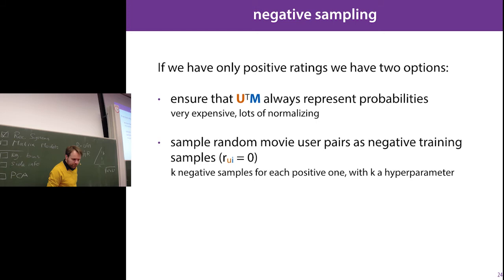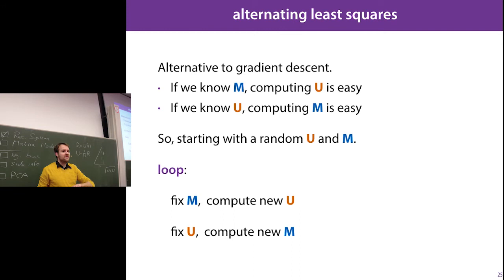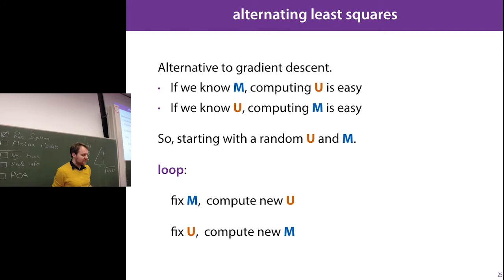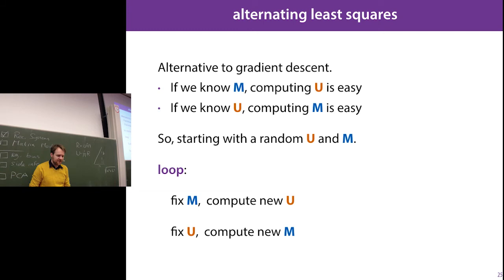Sometimes you only have positive ratings (e.g., a like button), so you need negative examples. A common trick is to sample random user-movie pairs and assume those are negative, since the rating graph is usually sparse. An alternative to SGD is alternating least squares (ALS): initialize U and M randomly, fix M and solve for U, then fix U and solve for M, and iterate until convergence — analogous to the EM algorithm. In some cases this converges faster or is more efficient.